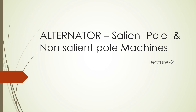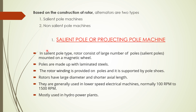Hi all, welcome to my channel. In this video we will see different types of alternators, that is salient pole and non-salient pole machines. In the previous video about alternators we discussed the construction and working of alternators or AC generators or synchronous generators in detail, and here we will see the types of alternators. Based on the construction of the rotor, alternators can be of two types: salient pole machines and non-salient pole machines.